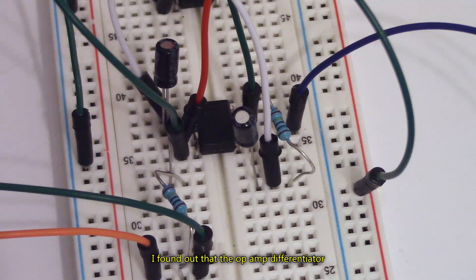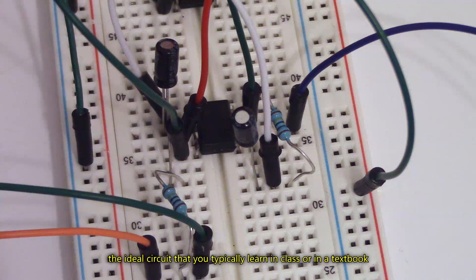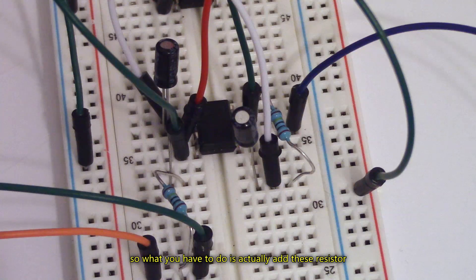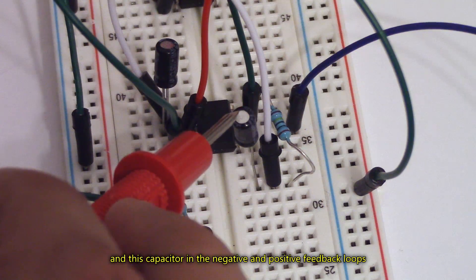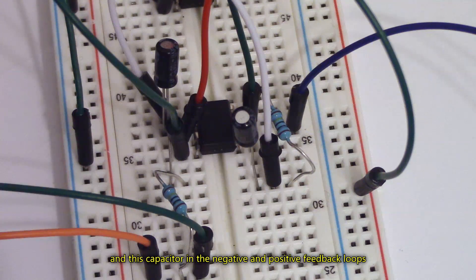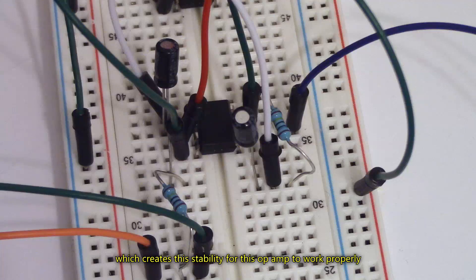I found out that the op-amp differentiator, the ideal circuit that you typically learn in class or in a textbook, is very unstable. So what you have to do is actually add these resistors and this capacitor in the negative and positive feedback loops, which creates this stability for this op-amp to work properly.